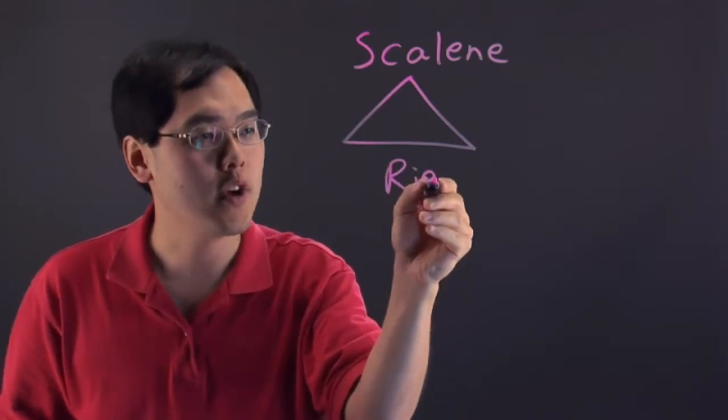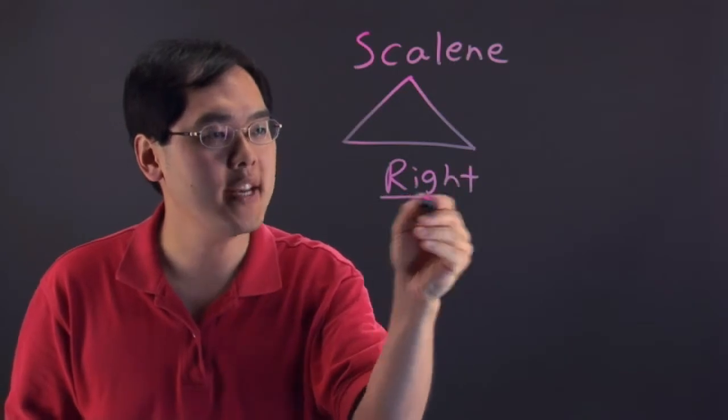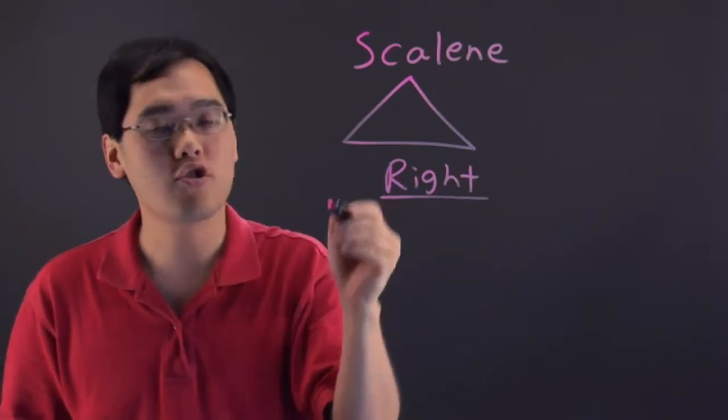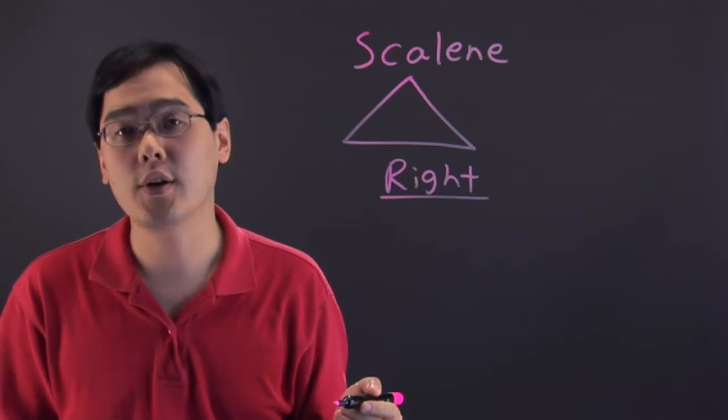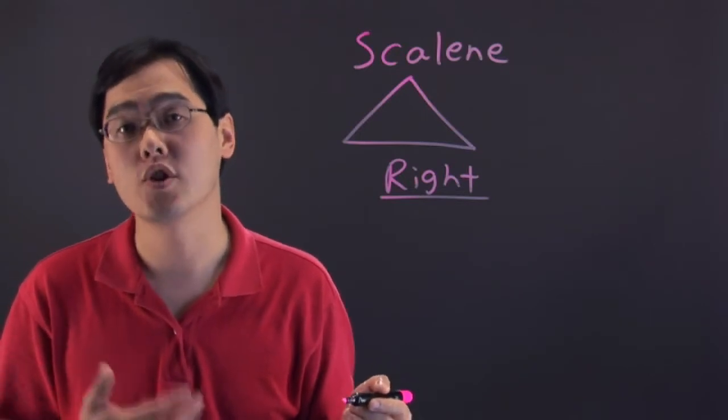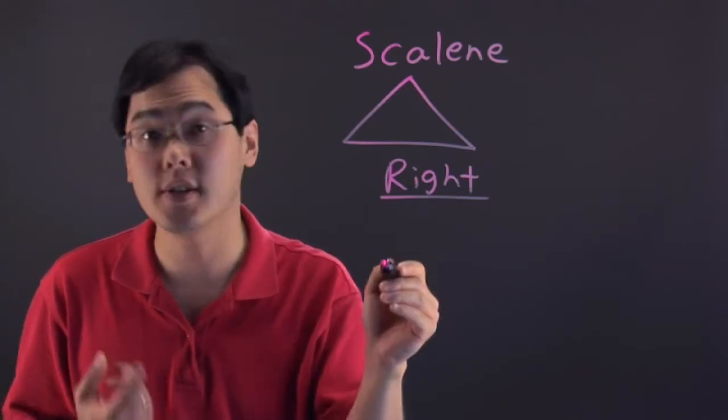Now another triangle that you want to think about is that of a right triangle. A right triangle, as the name implies, is a triangle that contains a right angle which means it's got a 90 degree angle. It's only got one though.